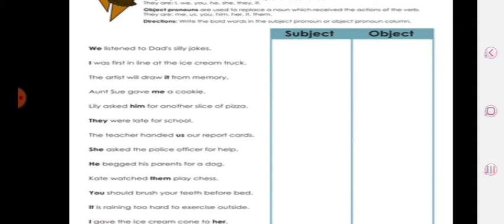Next is 'he begged his parents for a dog.' 'He' begged—'he' is doing that action. So the person who is doing the action, that pronoun is a subject pronoun, so 'he' is a subject.